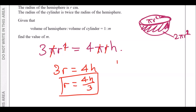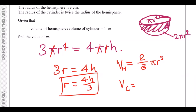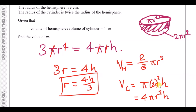For the volumes: the volume of a hemisphere is half of (4/3)πr³, which is (2/3)πr³. The volume of a cylinder is πr²h, but the cylinder's radius is 2r, so it becomes π(2r)²h = 4πr²h.